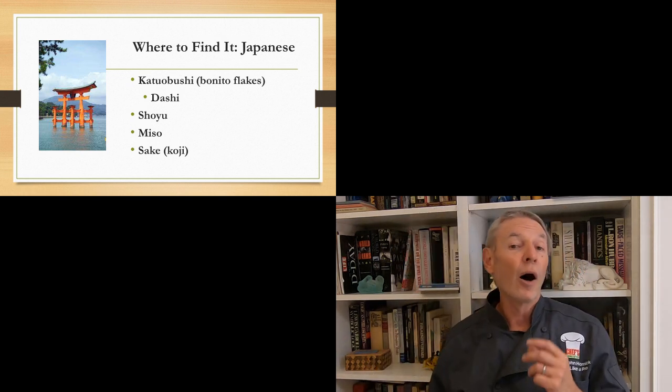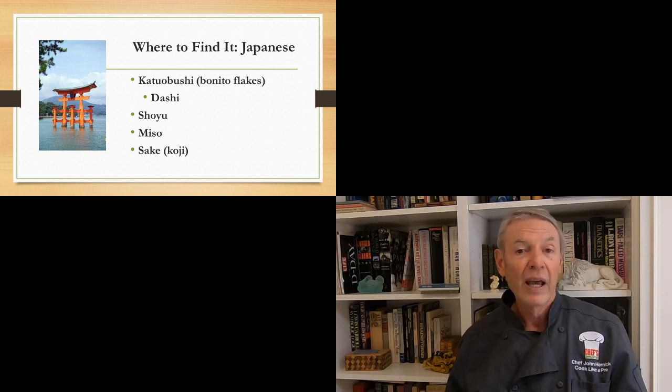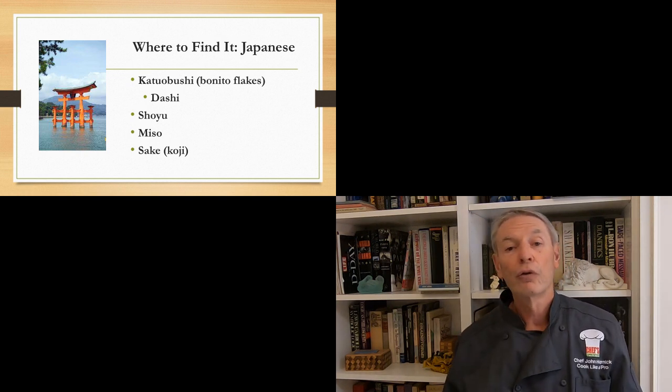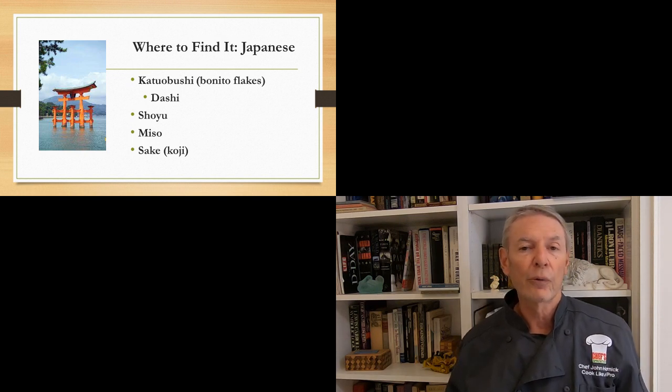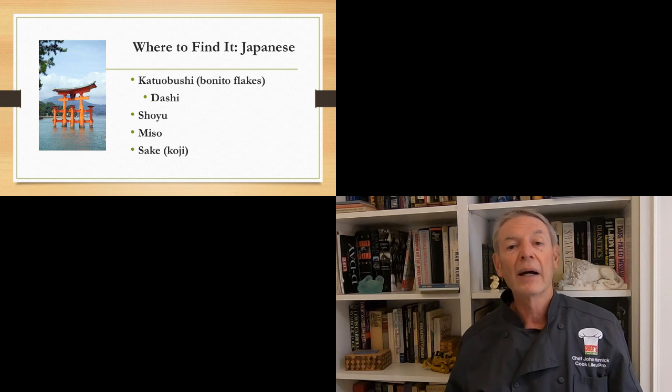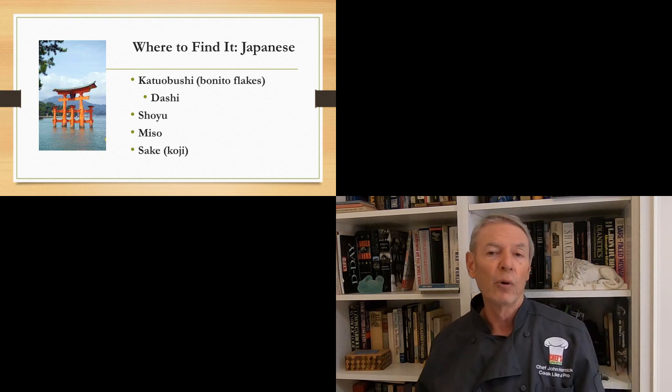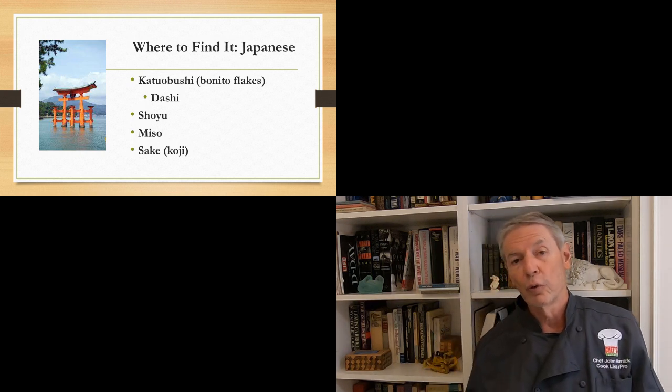And koji is a friendly mold that's used to inoculate rice. And then that rice is used to make sake. Koji can also be used to make other things, such as miso, for example. And it can be used as marinade. And it provides a lot of umami. You can get koji powder, for example, and use it as a sprinkling on food or as marinade.